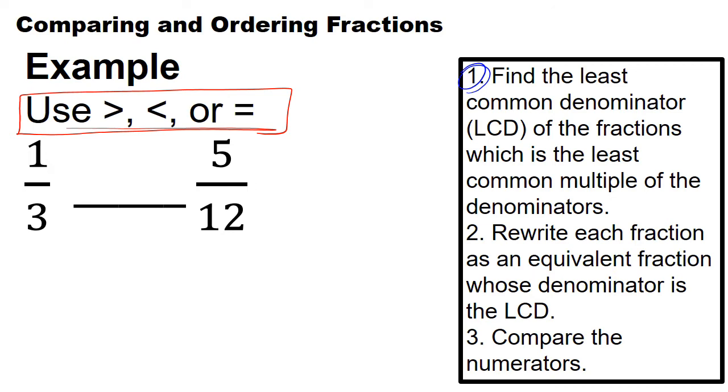So we know that between one-third and five-twelfths, when we compare our denominators, we need to have a common denominator of 12.